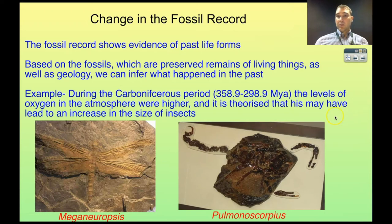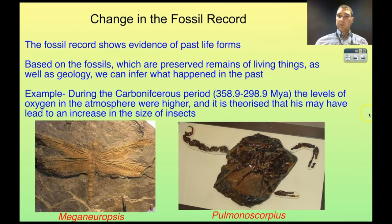The fossil record shows up evidence of past life forms — things that might have gone extinct. Fossils are preserved remains of living things, and along with geology — looking at the rocks themselves — we can tell what's happened in the past. A good example of this is during the Carboniferous period, where we know that the levels of oxygen in the atmosphere were much higher — around 30–35%, compared to the 20% that they are at the moment.